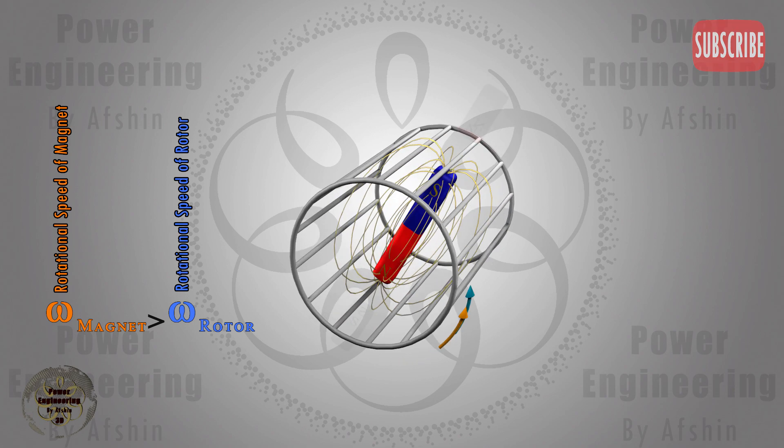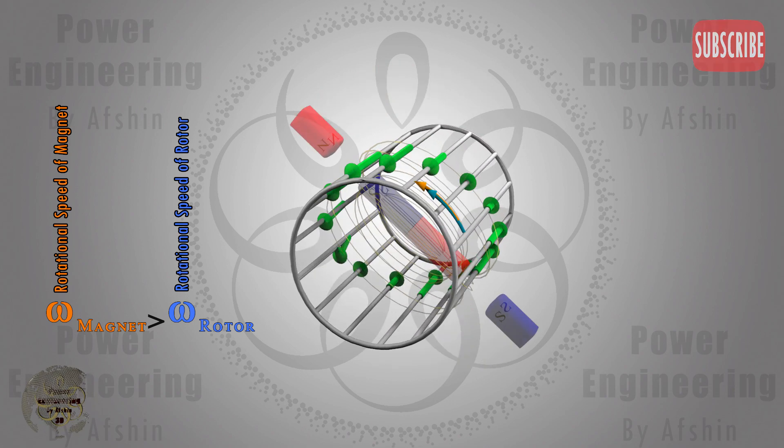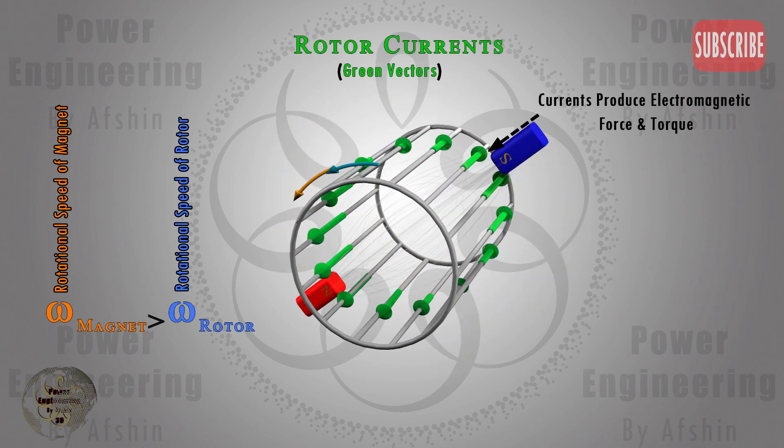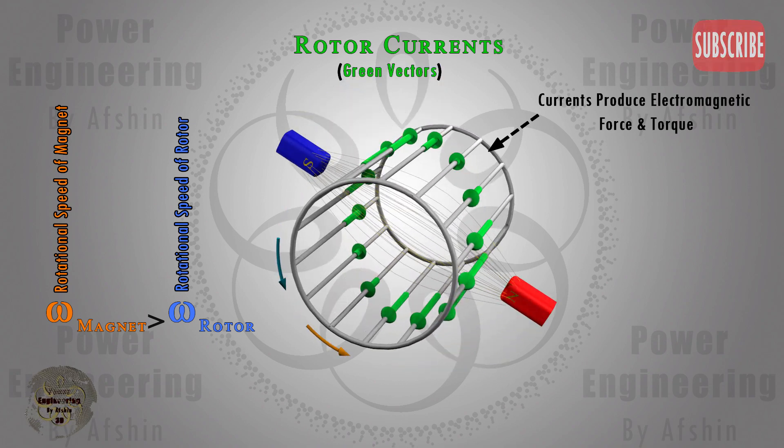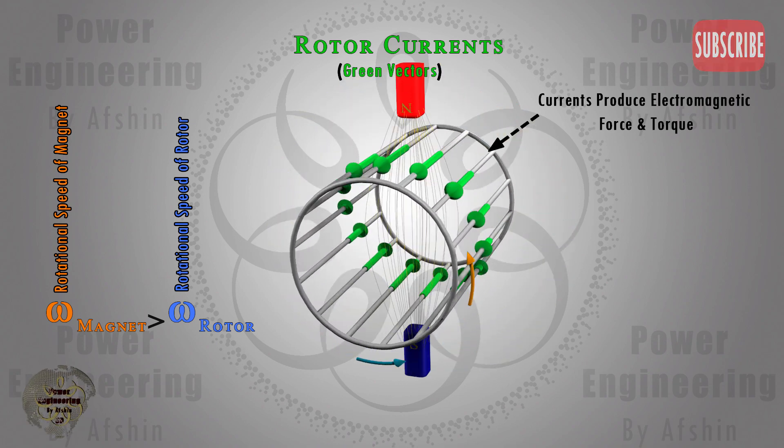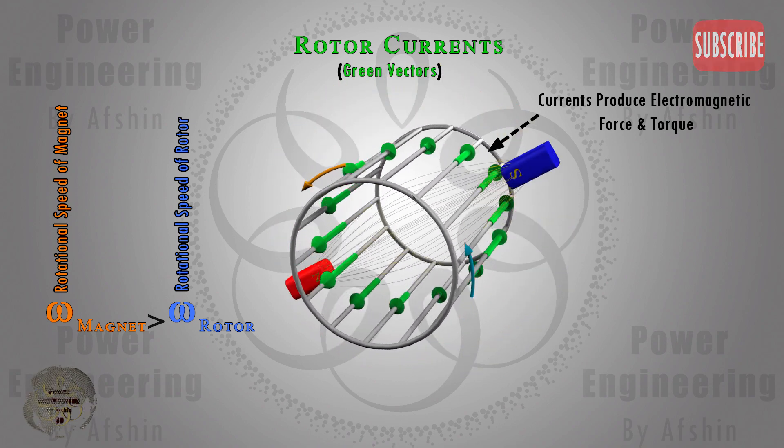This circular ladder can be referred to as a rotor. The position of the permanent magnet within the rotor, whether it's at the centre or rotating around it, makes no difference.